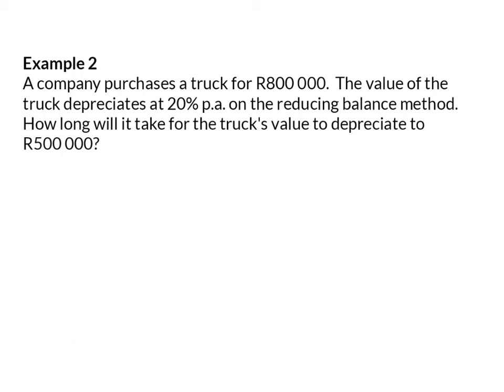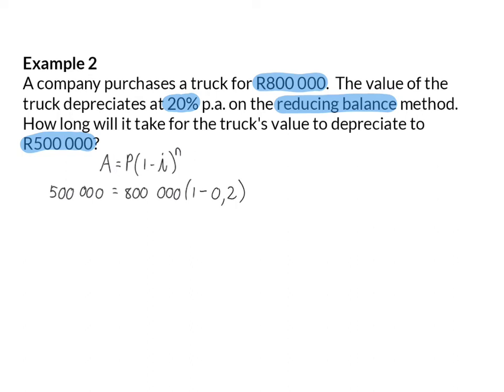Example 2. A company purchases a truck for 800,000 rand. The value of the truck depreciates at 20% per annum on the reducing balance method. How long will it take for the truck's value to depreciate to 500,000 rand? So we start off using the formula for the reducing balance method and substituting. So our final amount, or our depreciated amount, is 500,000 rand, and the original value of the truck was 800,000. The depreciation rate is 20% per annum, and we are asked how long it will take for this to happen.